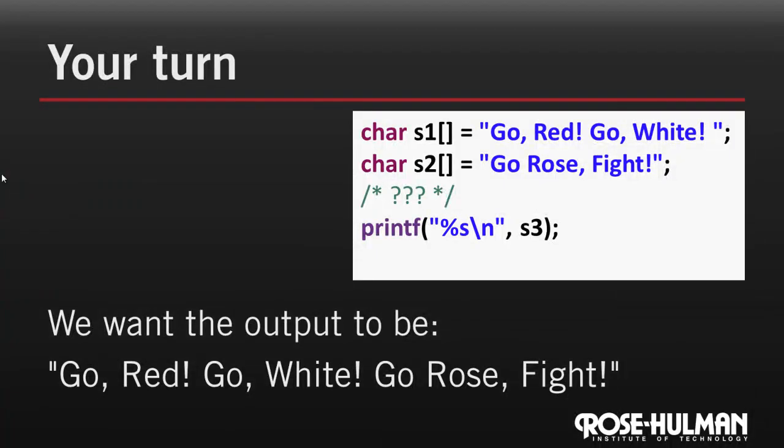Okay, it's your turn. Let's see how you do writing some short code that uses some of these functions. We're given two strings, s1 and s2, as shown. What lines of code would you need to write to get the output, go red, go white, go rose, fight, in the printf? Of course, declaring s3 with just that whole string literal would be cheating. Instead, use what you've learned about string copying and concatenating. Pause the video now, and write the code.